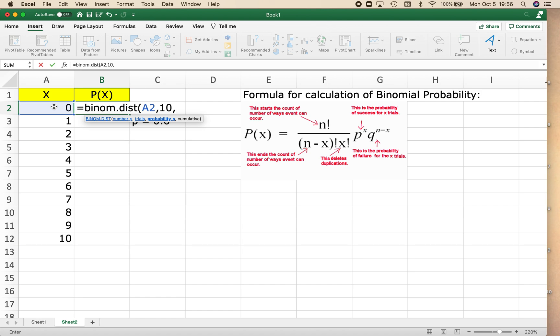The third thing you have to enter is the probability of success. So the probability of a successful outcome is 0.6. And finally, it wants to know whether we want the cumulative distribution or the distribution of just this x value itself.